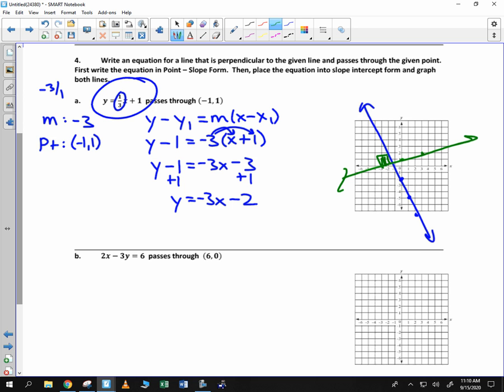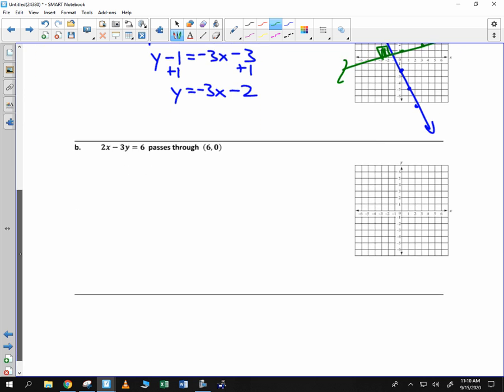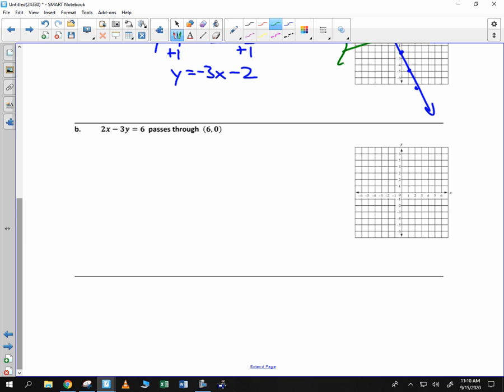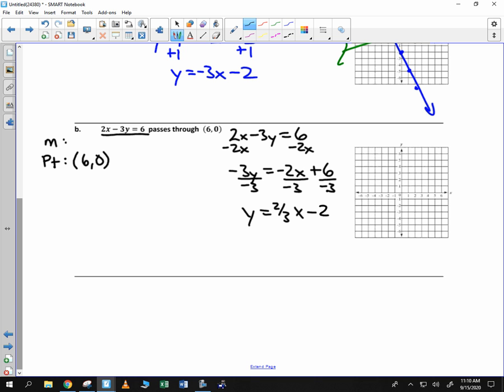Our last example, again, perpendicular line, we identify the slope and the point. Passes through the point 6, 0. In order to identify the slope, I must first place that into slope-intercept form. I subtract 2X, I get negative 3Y equals negative 2X plus 6. Divide by negative 3, and I get Y is 2-thirds X minus 2. So what's the opposite reciprocal of 2-thirds? It's negative 3 over 2.